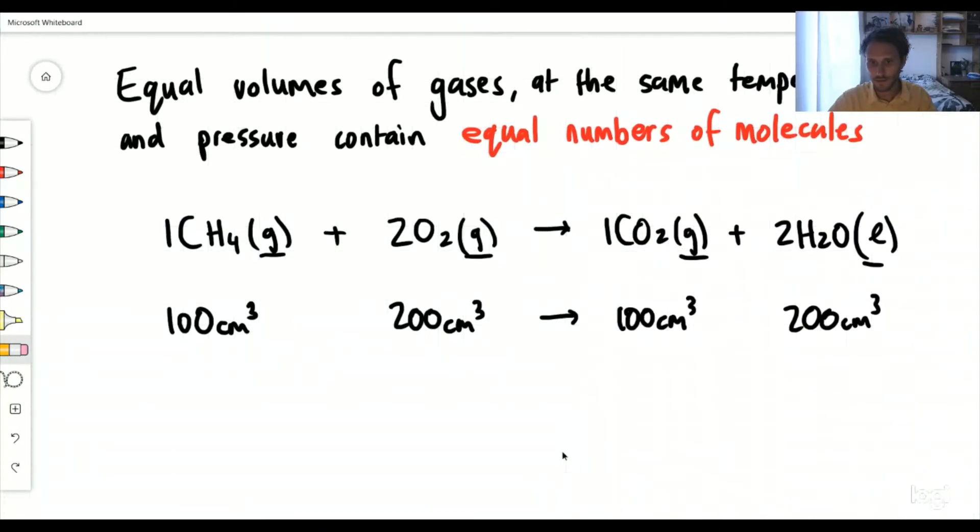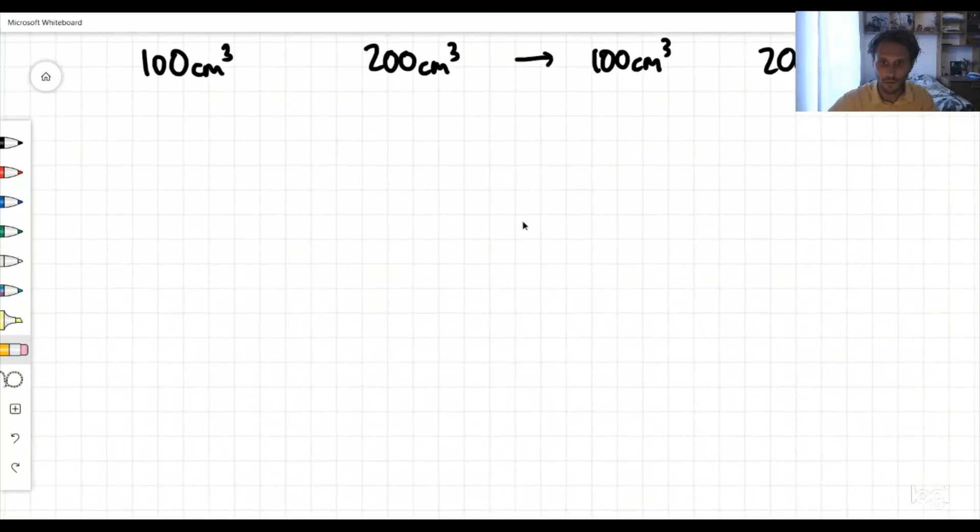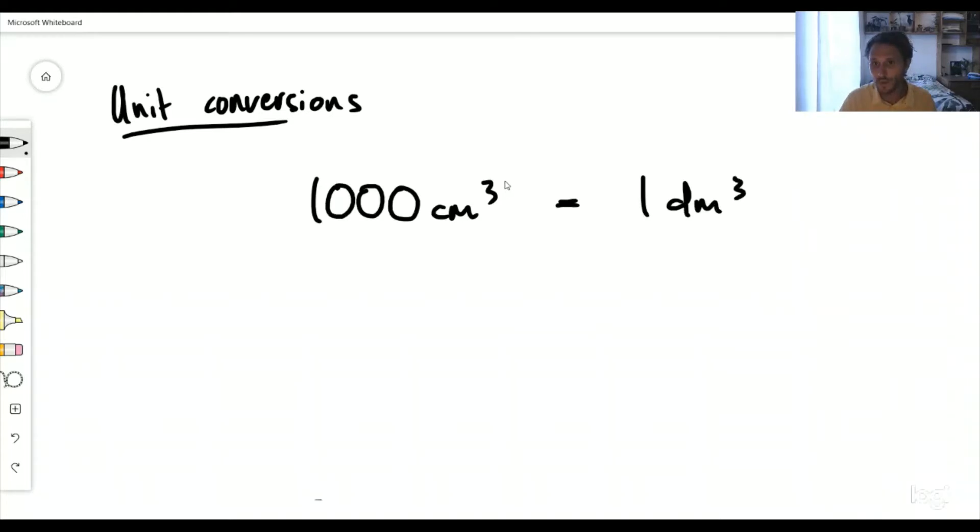Let's go on to something quite simple: unit conversions. In the previous example, we talked about centimeters cubed, like 200 centimeters cubed. Now, what you need to be able to do is convert that into decimeters cubed. That's the big unit that we always work with, decimeters cubed. So 1000 centimeters cubed is equal to one decimeter cubed.